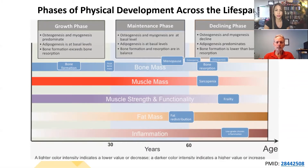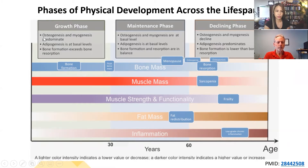Physical development covers how the body changes in regards to bone mass, muscle strength, functionality, fat mass, and of course inflammation, which we're learning a lot more about nowadays. During the growth phase, osteogenesis refers to bone formation, myo is muscle, and adipogenesis is fat formation — you can see that during growth all of that is happening at a rapid rate.